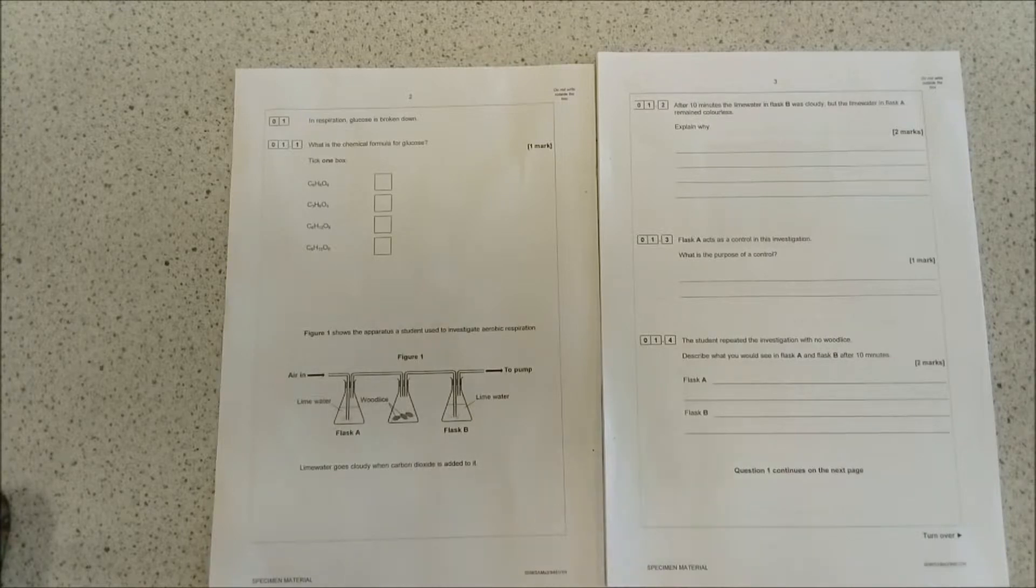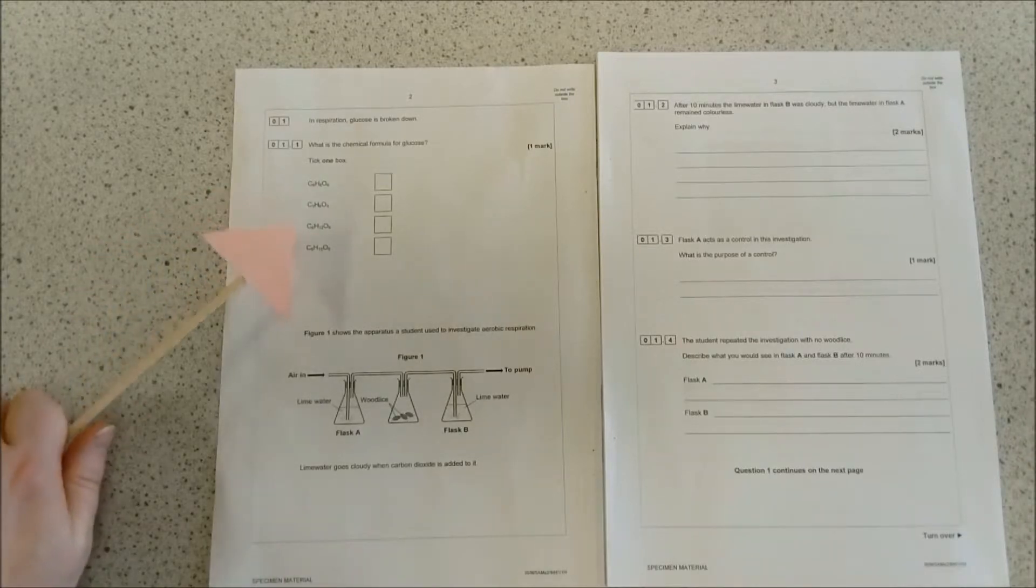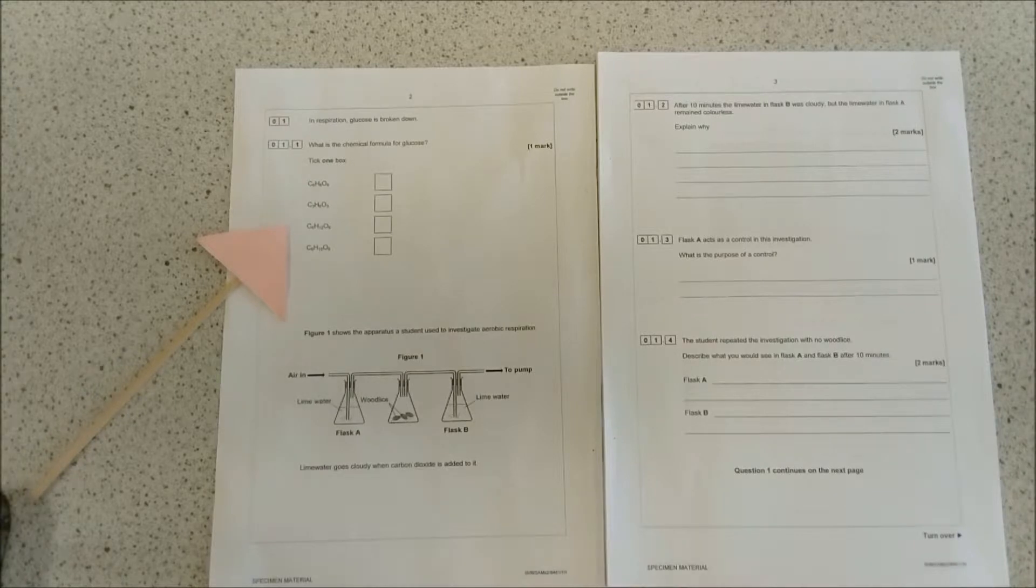Hopefully after, you'll be able to have a go at the question yourself and when it comes to the real exam, score those extra marks that will take you to the next grade boundary. So the first part is talking about what is the chemical formula for glucose. The chemical formula for glucose is C6H12O6.